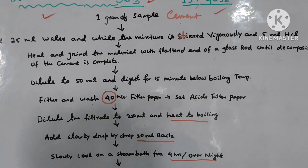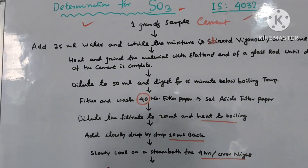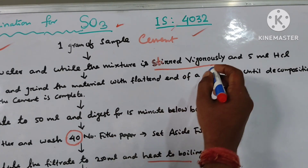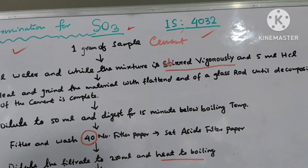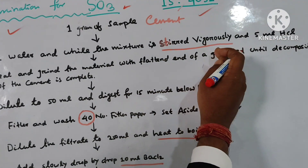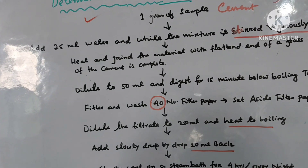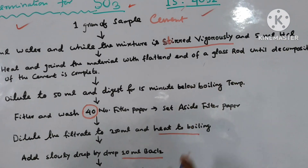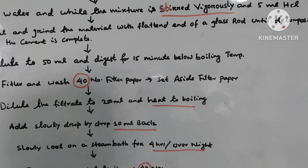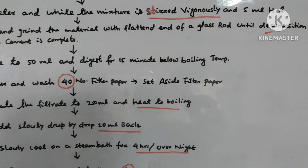Take one gram sample of cement — type of cement doesn't matter. Add 20 ml of water. While the mixture is stirred vigorously, add 5 ml of HCl. Then heat and grind the material with the flat end of a glass rod until decomposition of the cement is complete.